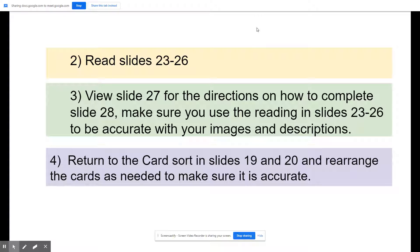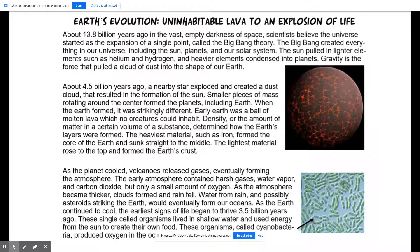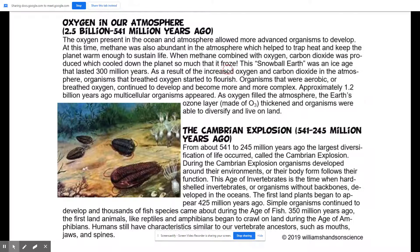And then you're going to return to the card sort and rearrange your cards accurately. So you're going to read about seven paragraphs, but they're short ones, about geologic time and how the earth formed and how life evolved and changed as the planet evolved and changed. This will help you to do the table on this slide.